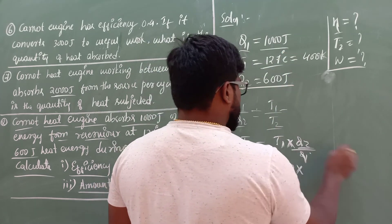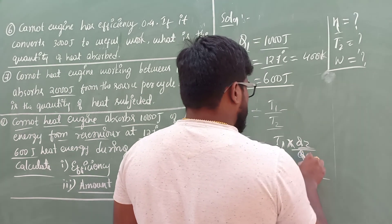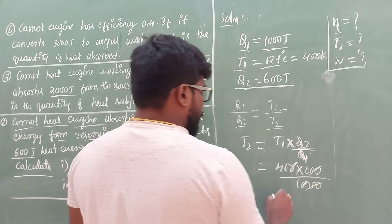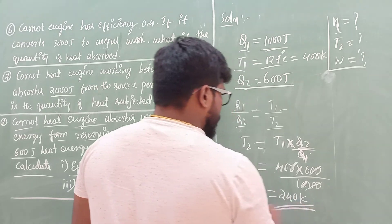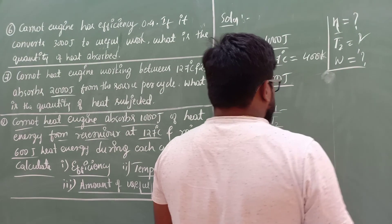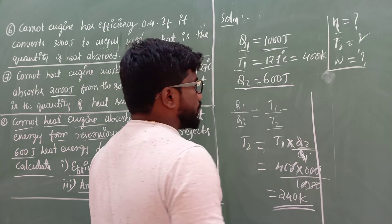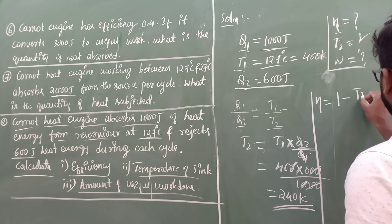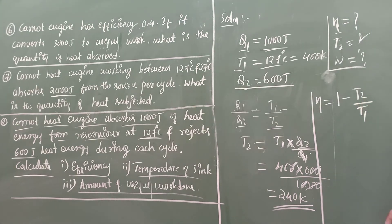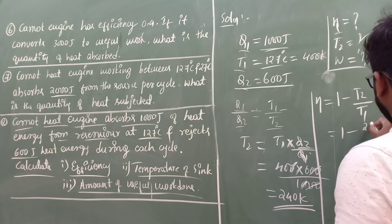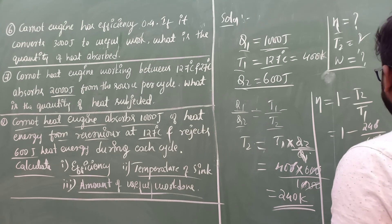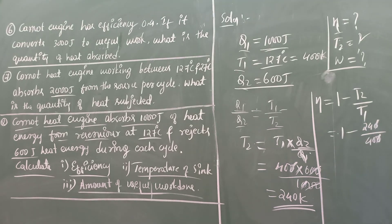Now find the efficiency using eta equals 1 minus T2 over T1. Substituting: 1 minus 240 divided by 400. Simplifying: 1 minus 24/40, which equals (40 minus 24)/40 equals 16/40. Simplifying further: 2/5 equals 0.4. So the efficiency of the given Carnot engine is 0.4, or 40%.